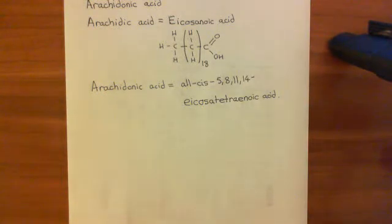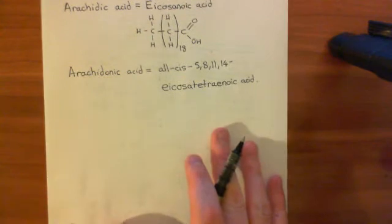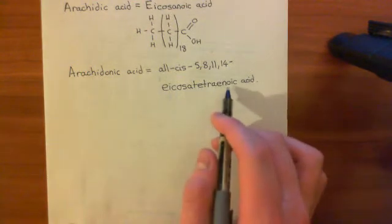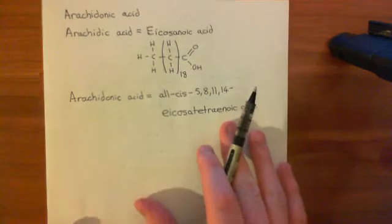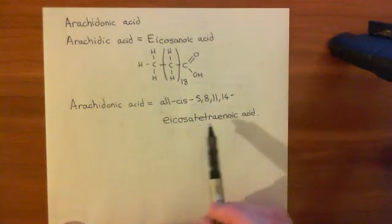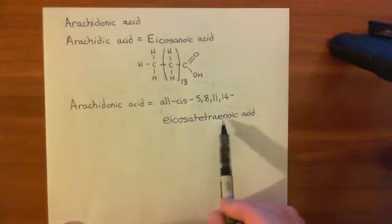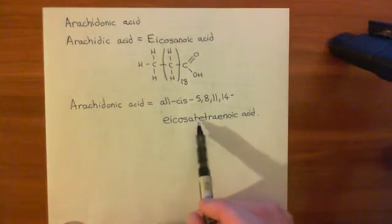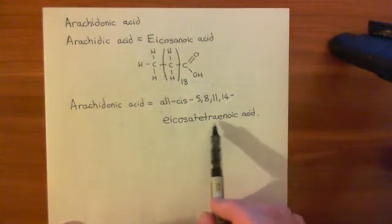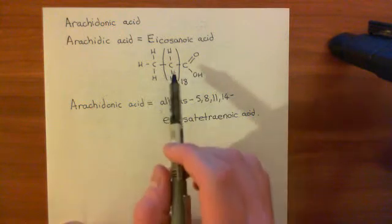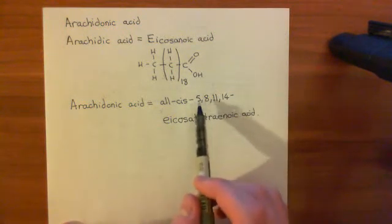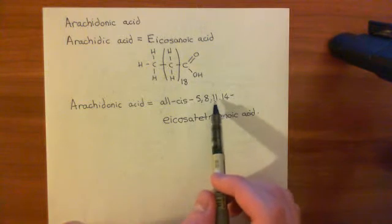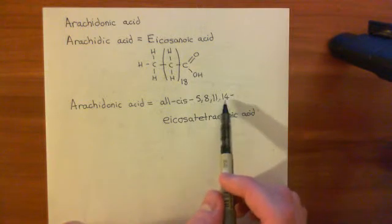So, icosatetraenoic acid is a 20-carbon carboxylic acid. However, it has some double bonds — that's what 'tetraenoic' tells you: you've got four double bonds in this structure. We're told exactly where they are: they're on the 5th, 8th, 11th, and 14th carbon.